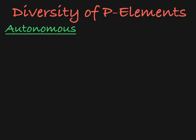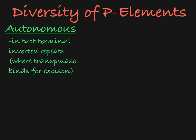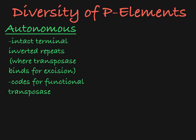P elements, when fully functional, are autonomous. That means they have intact terminal inverted repeats that carry a full coding gene for transposase. These autonomous elements can encode transposase, and that transposase can recognize the terminal inverted repeats, excise the transposon, and reinsert it elsewhere in the DNA.